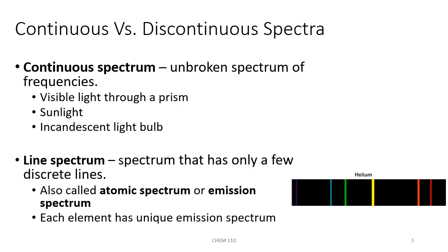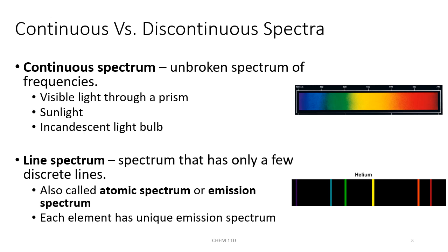If we were to look at sunlight through a prism and separate it into its component wavelengths, we would see all of the colors of the rainbow. This is called a continuous spectrum — it contains a continuous, unbroken distribution of light of all colors. But if we were to look at an element given some energy, usually in the form of a spark, and look at it through a diffraction grating, we would only see very specific discrete lines that show up, hence why it's called a line spectrum.